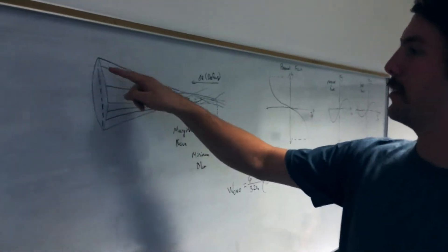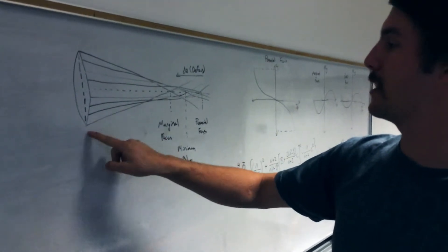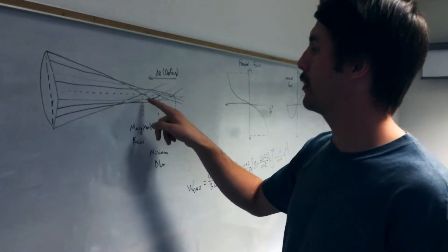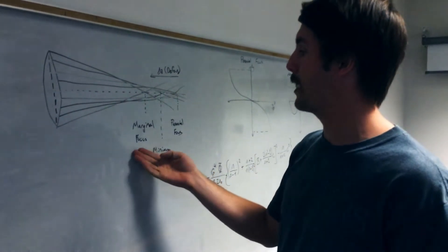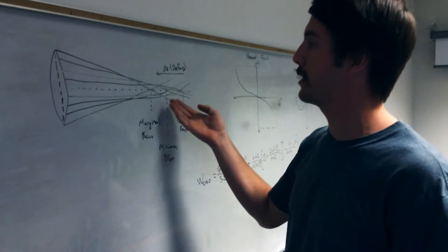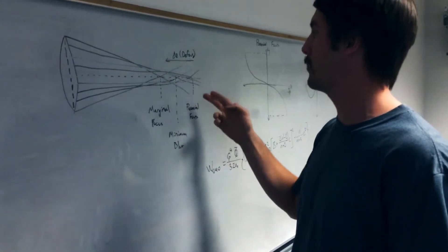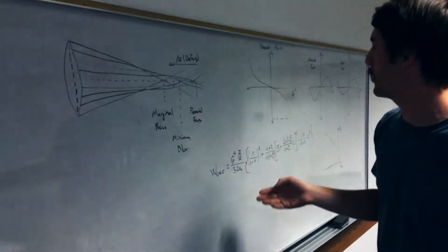Here we have these slits represent a Hartmann mask, and each of these rays passing through represent the different paths that the light can follow. Where the light crosses the optical axis is where we get our marginal focus, paraxial focus, and in the middle we get minimum blur. The distance between the paraxial focus and the marginal focus can give us the defocus to get from one to the other.